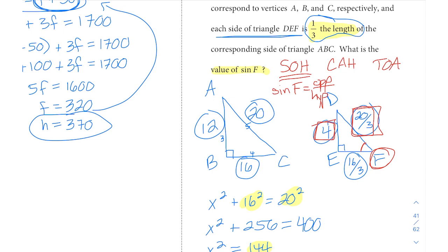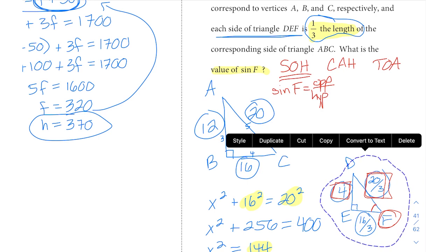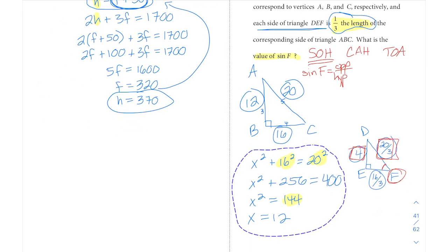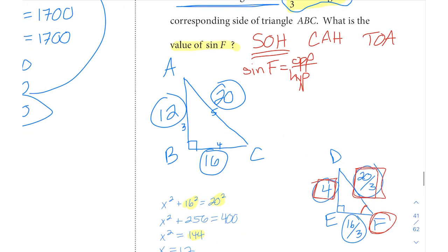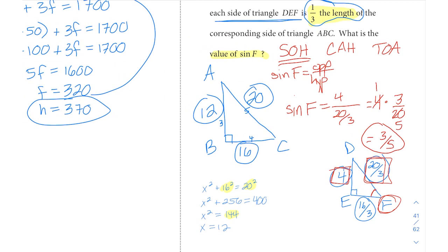When we go to solve for sine of F, opposite over hypotenuse. Let me move this around a little bit and make things smaller. Now we have a little bit more room. Your sine of F is going to equal 4 divided by your hypotenuse, which is 20/3. Dividing by a fraction is the same thing as multiplying by the reciprocal, or keep-change-flip: keep the numerator, change division to multiplication, and flip the fraction in your denominator. We can cross-cancel, and we're going to be left with 3/5 for that ratio for sine of F.